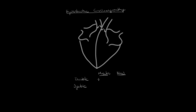During diastole, the muscles are relaxing, which causes dilation of the chamber — you can think of D for diastole — and this causes blood to fill the chamber. During systole, the muscles are contracting, and this causes blood to be ejected from the chambers.